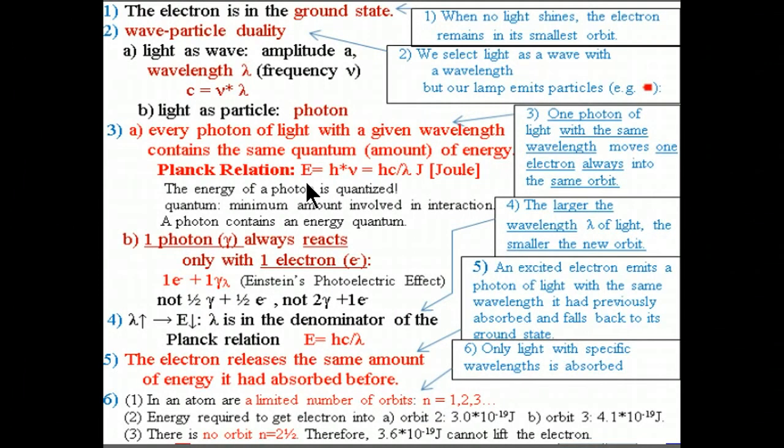This is equal to the Planck constant multiplied by the speed of light divided by lambda, the wavelength. You should always remember that the energy of light is incorporated into a photon, which is a quantum. So each photon has a specific amount of energy.